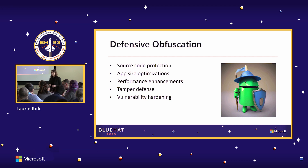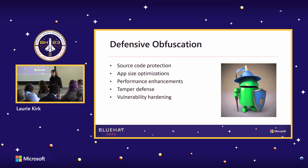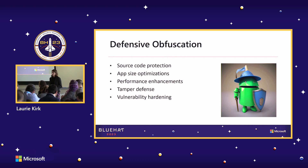For example, if they're taking the variable, method, or class names in an application, they might reduce the size of those, because if you decompile an application you get the original developer variable names. By reducing those sizes, you're reducing the overall size of the entire application. Other reasons include tamper defense or vulnerability hardening — obfuscating the underlying functionality so a reverse engineer won't be able to understand how the code works and therefore can't develop custom exploits.